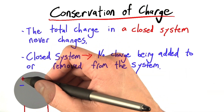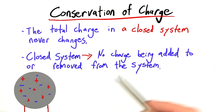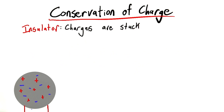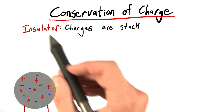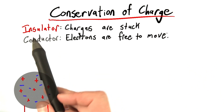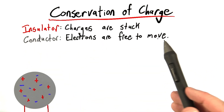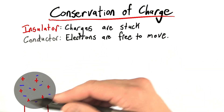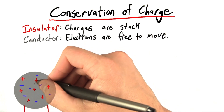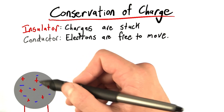Those atoms contain positive protons and negative electrons. Our stand has to be an insulator, something in which charges are stuck and can't move. The other end of the spectrum is a conductor, in which electrons are free to move. In the case of our conducting sphere, the positive and negative charges in this neutral conductor are perfectly balanced.